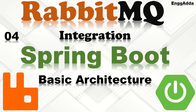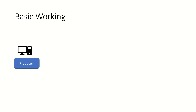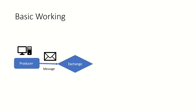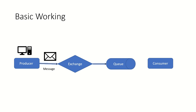Let's go to the next slide to explain the basic working. Let's say we have one web application which is a producer, and it is producing some messages. That message goes to the exchange — the exchange is a buffer which holds messages and has information about where to route the message, to which queue. Based on that information, it sends the messages to the particular queue. Then we have one consumer which consumes the messages from that queue. That is the basic working of RabbitMQ with one exchange, one queue, one producer, and one consumer.